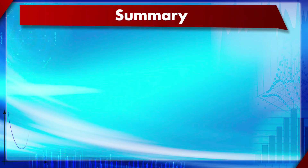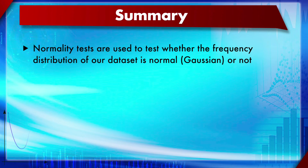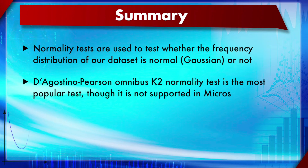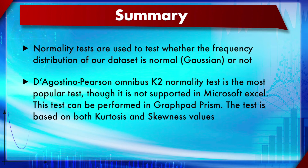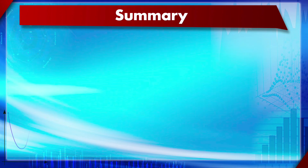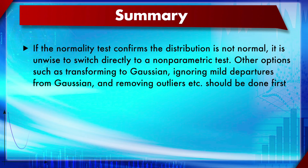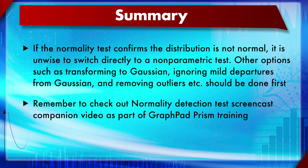We will discuss statistical power later. In summary, normality tests are used to determine whether the frequency distribution of a data set is Gaussian or not. The D'Agostino-Pearson Omnibus K2 normality test is the most popular, though not supported in Microsoft Excel — it can be performed in GraphPad Prism and is based on kurtosis and skewness values. If the normality test confirms the distribution is not normal, it is unwise to switch directly to a non-parametric test because of reduced statistical power. Other options — such as transforming to Gaussian, ignoring mild departures, or removing outliers — should be tried first.